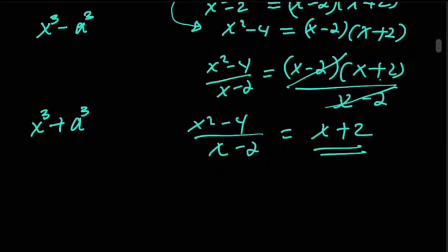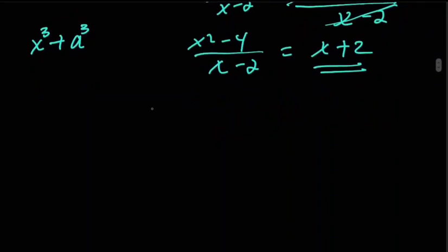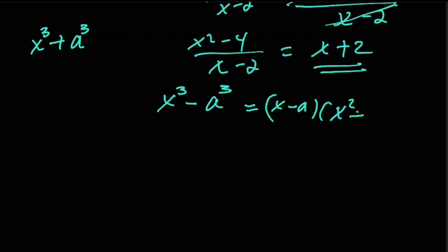Now let's look at how to factorize x cubed minus a cubed. You factorize this as x minus a times x squared plus ax plus a squared. You can expand the product to check that this equals x cubed minus a cubed.